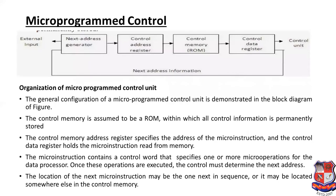Now we will see the organization of the micro program control unit. Using this diagram, we can identify four different categories: first is the control memory, then the control address register, then the control data register, and the next one is the next address generator.